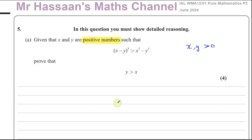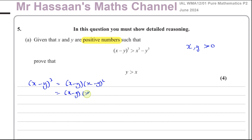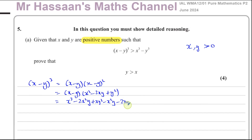We need to expand x minus y cubed. One way is to write it as x minus y times x minus y squared. We know x minus y squared gives x squared minus 2xy plus y squared. Expanding further: x times x squared is x cubed; x times minus 2xy is minus 2x squared y; x times y squared is plus xy squared. Then minus y times x squared is minus x squared y; minus y times minus 2xy is plus 2xy squared; and minus y times y squared is minus y cubed.